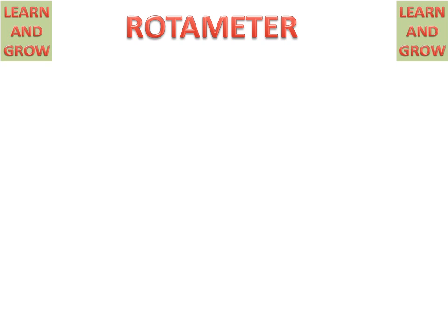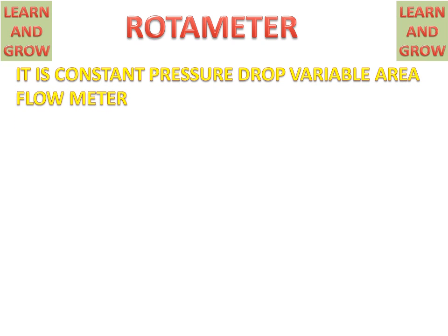Today we will discuss rotameter working and parts. What is a rotameter? It is a constant pressure drop variable area flow meter.